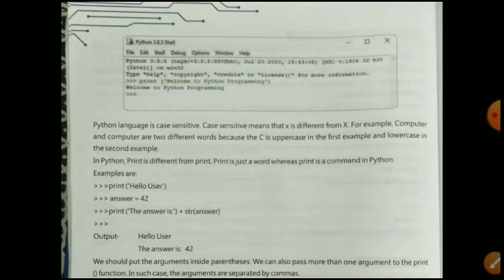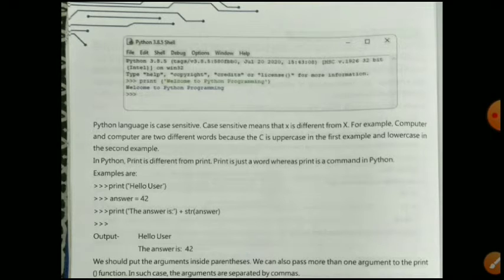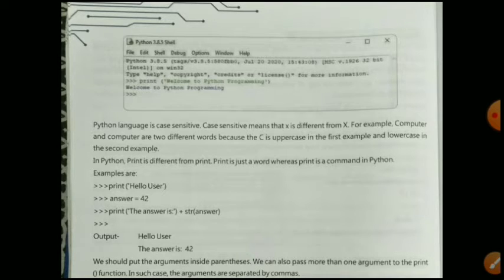'Print' with capital P is just a word, while 'print' with lowercase is a command in Python. For example, if you write print in small letters and give 'hello user' in single quotes, then set answer equal to 42 and print 'the answer is' in single quotes plus the string 42, your output will be: hello user the answer is 42.